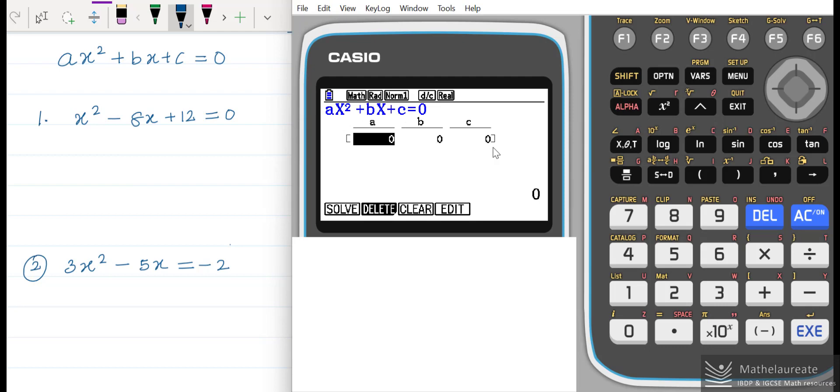Look at this example here. The first example is 1x squared minus 8x plus 12 equal to 0. Here a value is 1, and b is negative 8, and c is 12.